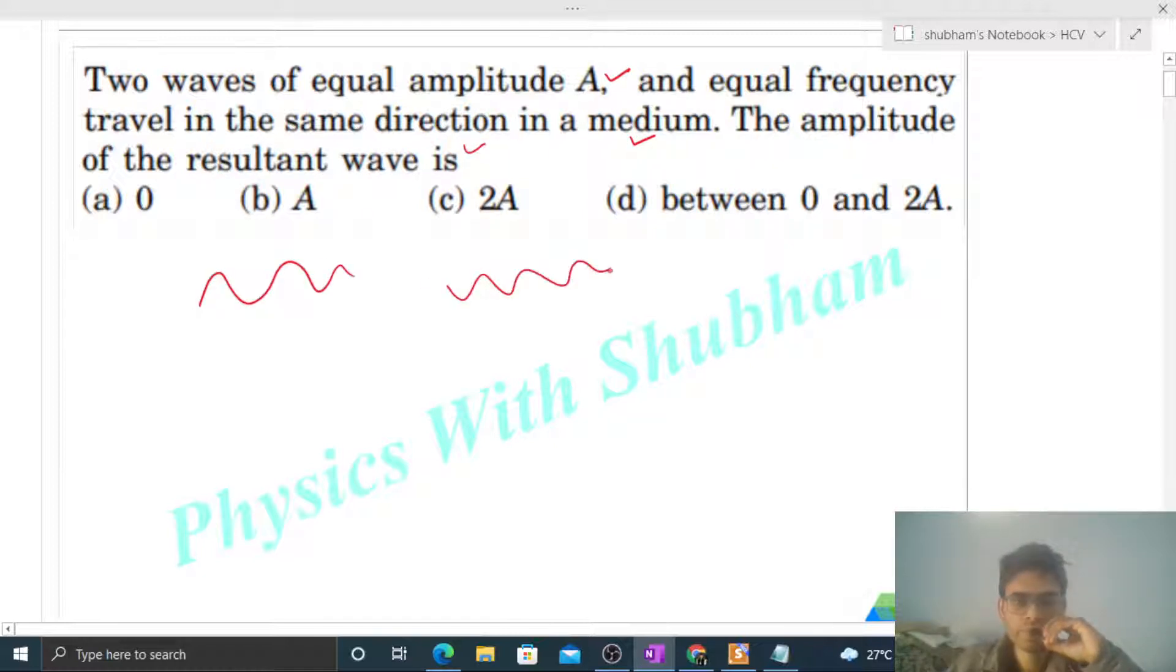Superposition. The resultant wave amplitude will be under root of A1 square plus A2 square plus twice of A1 into A2 into cos phi. What is A1? Amplitude of the first wave, that is A.